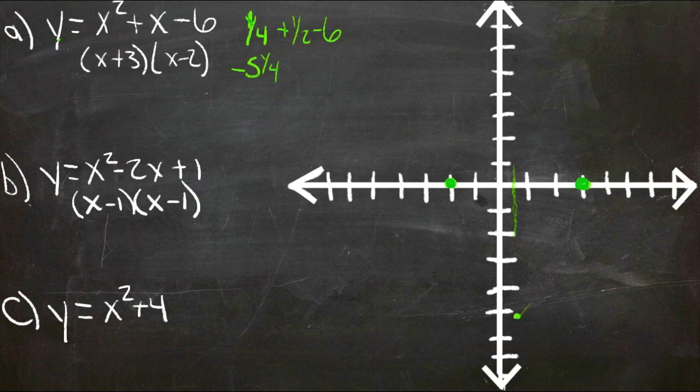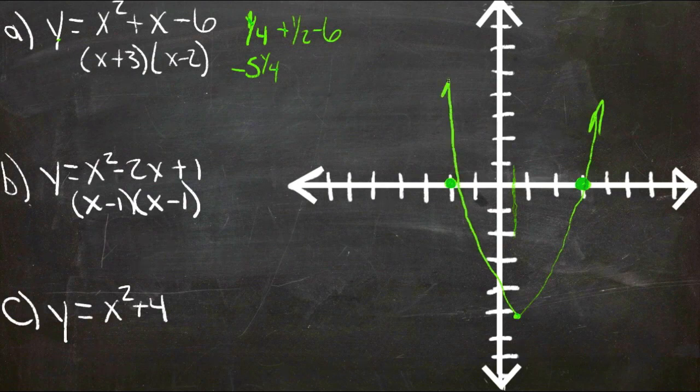And this parabola graphs like this. Comes up from down below, crosses the x-axis at both of these points, and goes on up into infinity there.